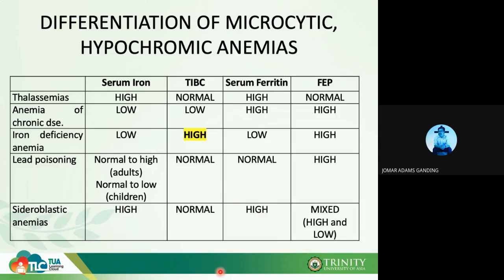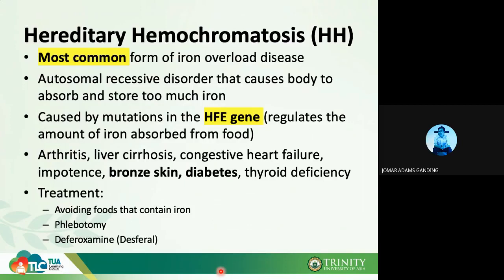Take note of this comparison table as it may appear as a case study in future exams. Moving on to hereditary hemochromatosis — this is the most common form of iron overload disease. It is an autosomal recessive disorder that causes the body to absorb and store too much iron.